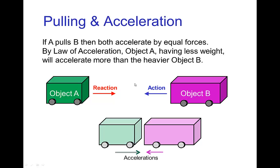Here's another picture of that. Let's say object A and object B have some kind of attraction, maybe like a magnet. In that case, the action and reaction forces will be equal as they are pulled towards each other. But if object B is heavier, it accelerates less and will move less distance, while object A accelerates more and will move a farther distance.